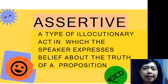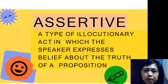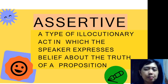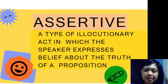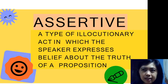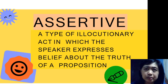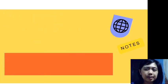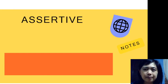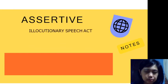The first one is called assertive. Assertive is a type of illocutionary speech act in which the speaker expresses belief about the truth of a proposition — something that is being stated, where the speaker has his own way of believing things, his own perception of how he interprets things.